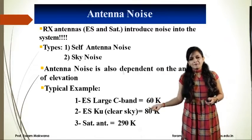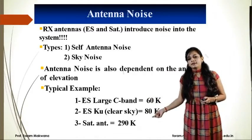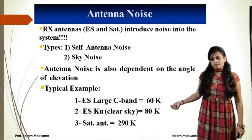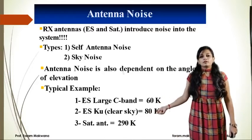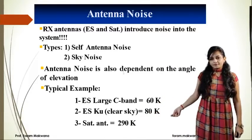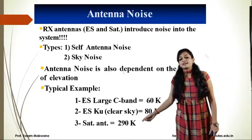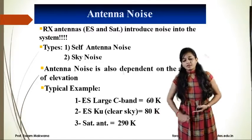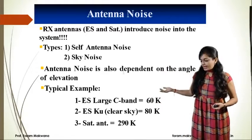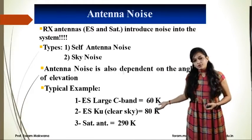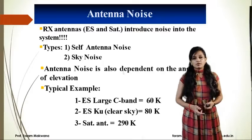Real examples: for an earth station operating at C band, antenna noise will be 60 K. For an earth station operating at Ku band, antenna noise will be 80 Kelvin. For a satellite antenna, the noise temperature is 90 Kelvin — it is fixed. So as frequency increases, my antenna noise temperature is also going to increase.